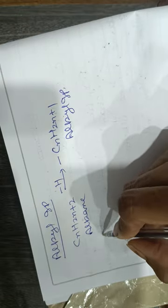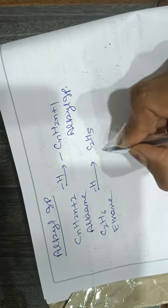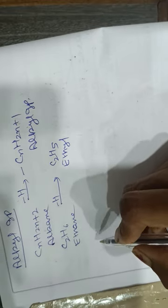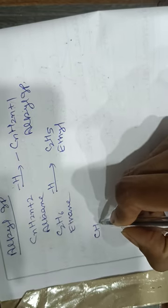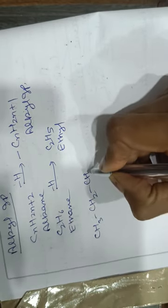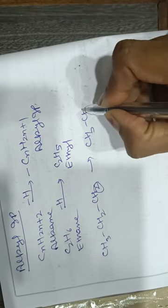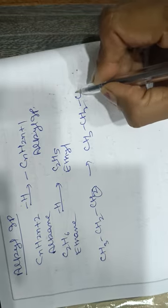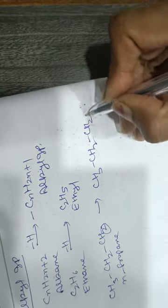For example, we have C2H6 giving rise to the ethyl group. If we have 3 carbons, then we have normal propane. If a hydrogen atom is removed from the terminal carbon, we get the group CH3–CH2–CH2–, and this is called the normal propyl group, because it is derived from N-propane.